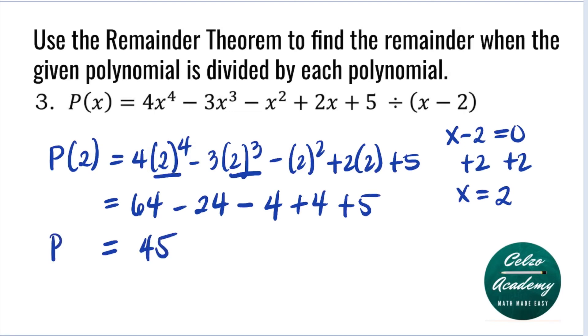So P of 2 is 45, and this means 45 is the remainder when P of X is divided by X minus 2.